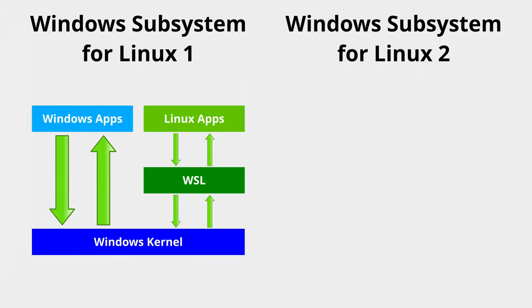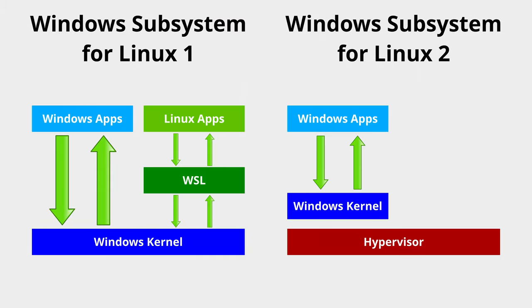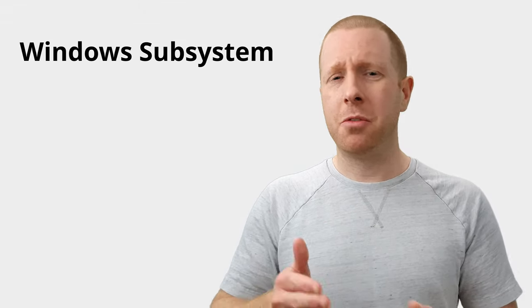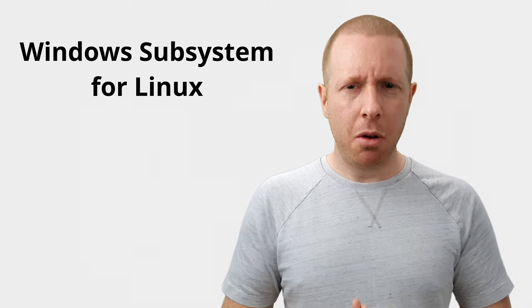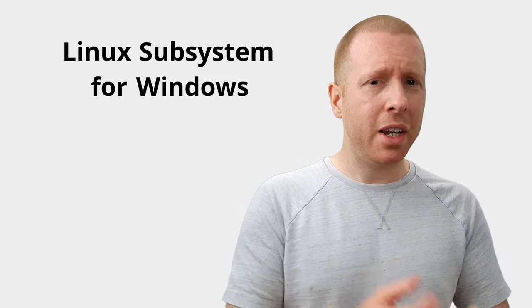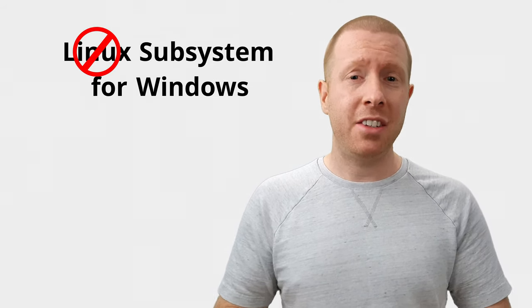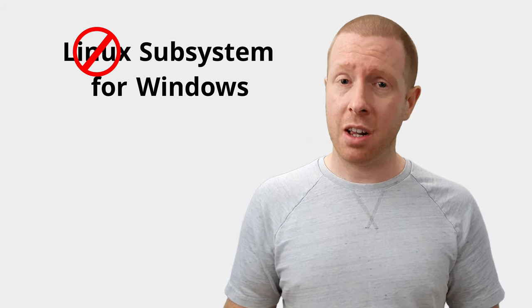WSL 2 works quite differently. Rather than pretending to be a Linux kernel, WSL 2 uses virtualization technology to host an actual Linux kernel inside a virtual machine. This means it's actual proper Linux. This approach is a lot more efficient because you're not having to translate everything from Linux to Windows and back to Linux again. That means WSL 2 has better performance and better compatibility compared to WSL 1. If you're running the 2004 version of Windows 10 or later, you might want to switch to WSL 2.